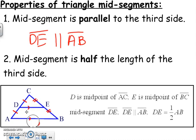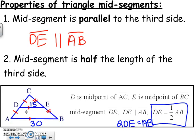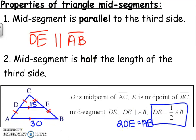Also, if they gave you the third side and said it was 30, then to find the mid-segment you would half it and get 15. The mid-segment is half of that third side, or two of the mid-segments would equal that third side. If you like fractions, go with fractions. If you don't like fractions, deal with doubling the mid-segment. Alright, time for some practice problems.